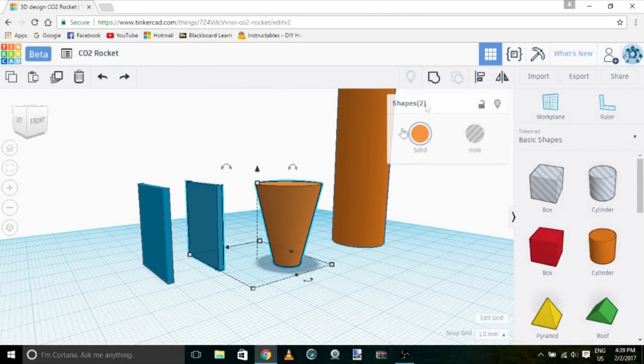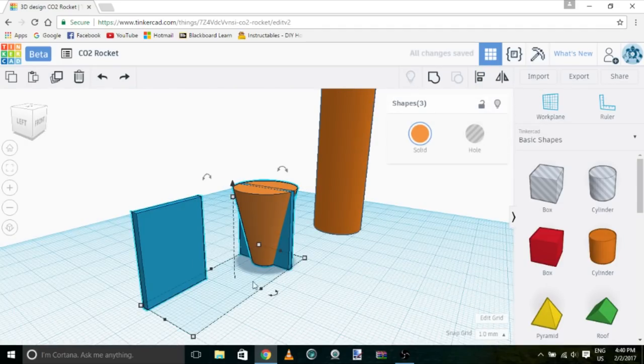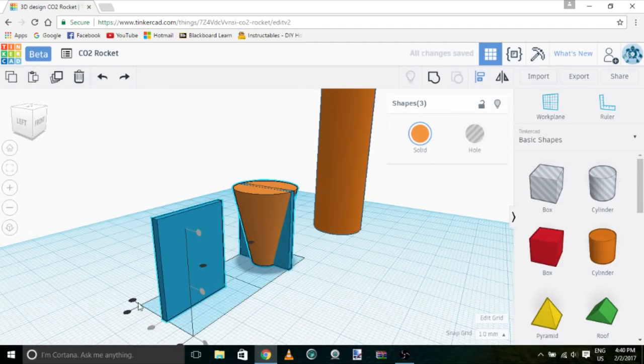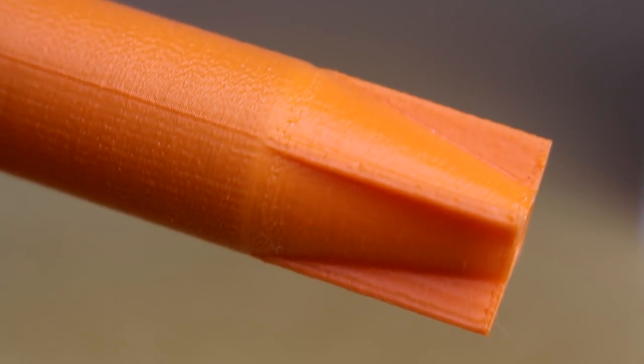So the first thing I wanted to do when I was designing these rockets was add some sort of fins to the bottom. Now I just want to say I'm a complete amateur when it comes to any kind of rocketry and I had some trouble thinking of ways to add the fins, but I think what I came up with may help a little bit.